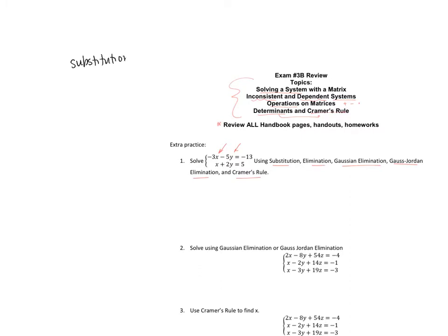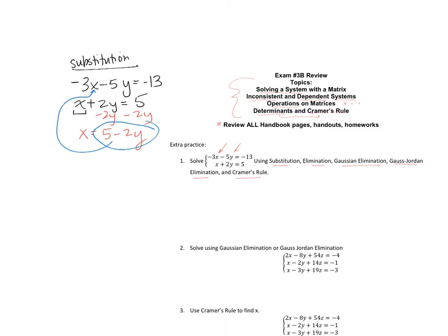Substitution and elimination are the methods we used on our last exam. What's nice about them is if you're comfortable with those, you can find what the solution is supposed to be and then use the matrices to check that you're right. For substitution, I want one equation solved for a variable. Looking at the second equation, it's easiest to isolate x — no coefficient in front. So if I subtract 2y, I get x equals 5 minus 2y.